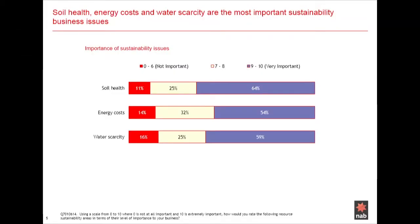We already know that our customers are ahead of us in thinking about natural capital issues. We surveyed over 5,400 customers and asked them about natural capital and what issues were important to them. The top three rated natural capital issues of concern were soil health, energy costs, and water scarcity, followed by runoff and biodiversity. In fact, 89% of customers rated soil health 7 or more out of 10, 86% rated energy costs the same way, and 84% rated water scarcity as a critical issue.